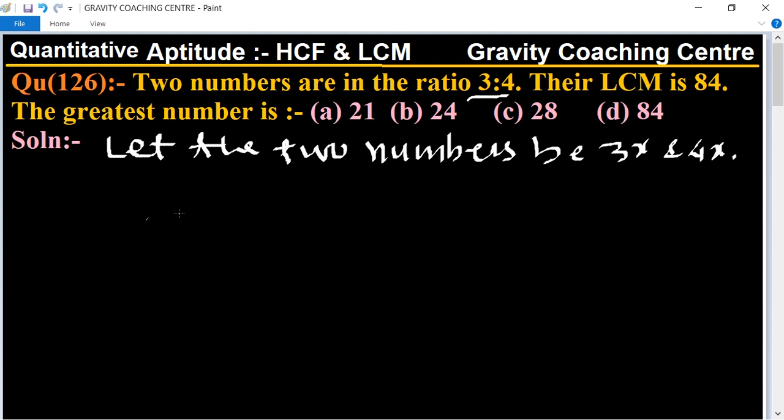LCM is given as 84. So the LCM of 3x and 4x is 3 into 4 into x equal to 84.